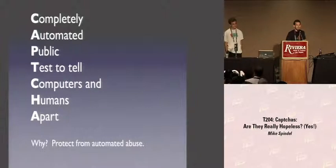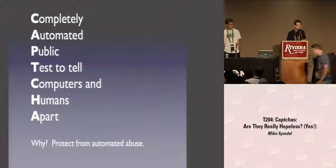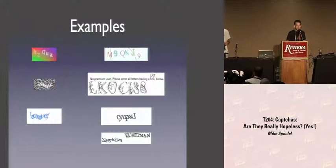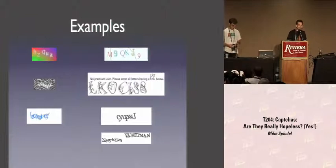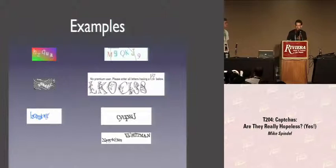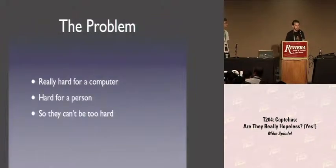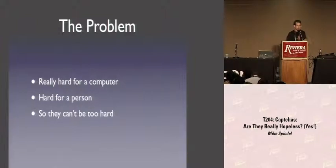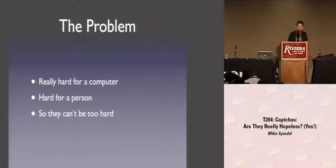I'm sure most of you have seen this kind of thing. CAPTCHAs are supposed to prevent automated robots from abusing web sites, but they really come in all sorts of shapes and sizes — some are colored, some are squiggly, some have grids, some ask you to solve high-order calculus problems. In order to make a good CAPTCHA, it has to be really hard for a computer, but in order to be hard for a computer, it's got to be pretty hard for a person too.